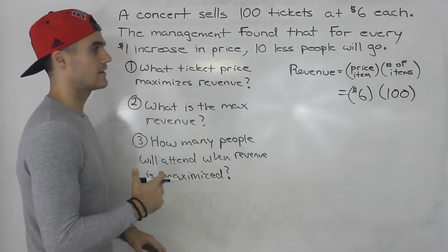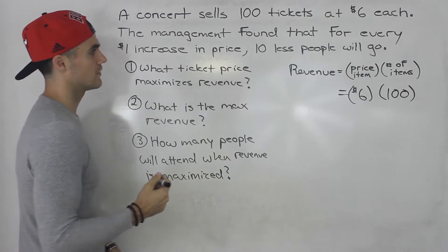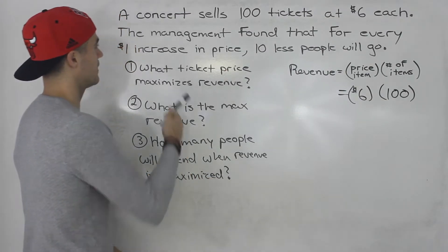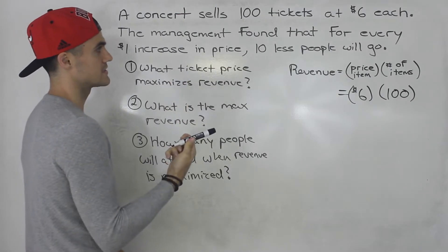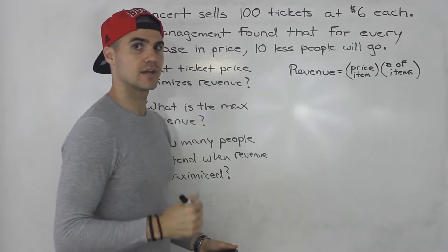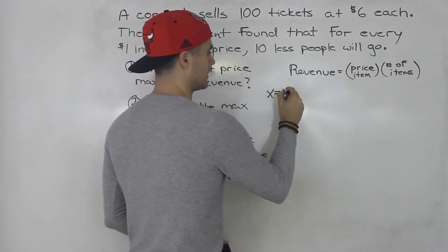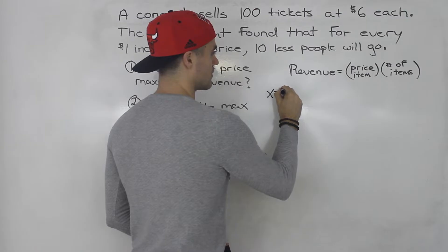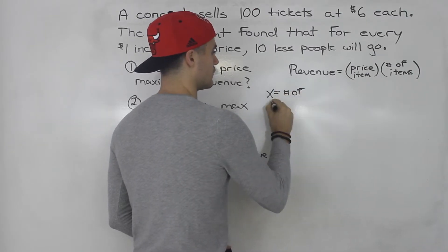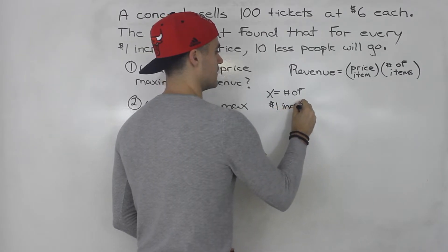But they're wondering, can they increase that revenue? They're told that for every $1 increase in price, 10 less people will go. So we can introduce a variable x and let it equal the number of $1 increases in price.